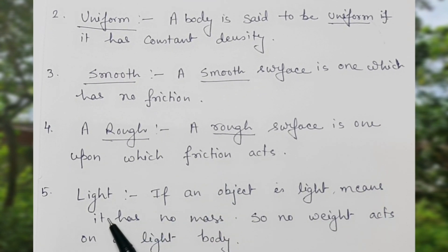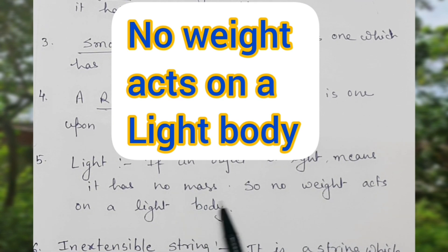Next one is light. Light means if an object is light, it has no mass. So no weight acts on a light body.